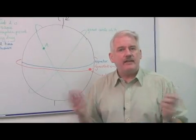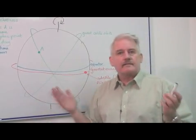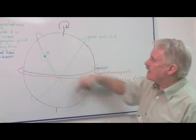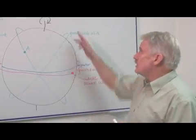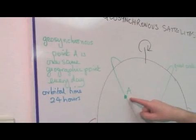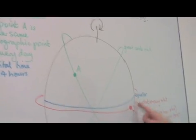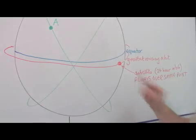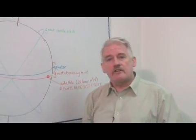It wouldn't be much good having a TV channel where only between seven and eight in the evening could you get the satellite to work. You want the satellite working all the time, and therefore there is a set of satellites together which provides you with this service. So geosynchronous satellites are ones with an orbital time of 24 hours, stationary at the same point on the Earth once a day — unless they are in a geostationary orbit around the equator, in which case they are above the same point at all times.